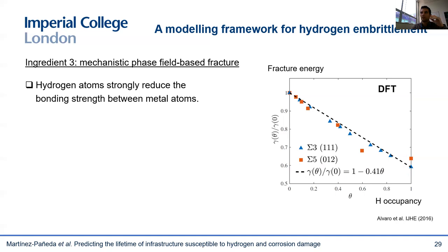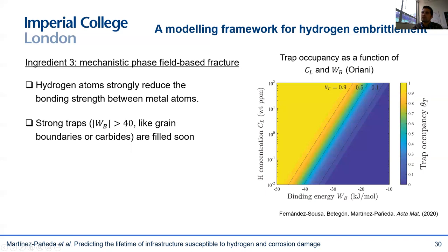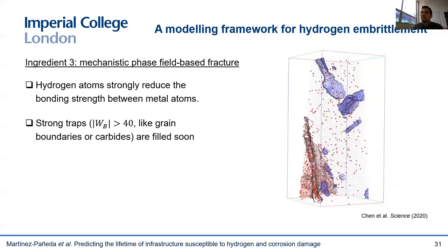If we have enough hydrogen, the grain boundary strength will be weaker. The key question then becomes: how much hydrogen do we have in our grain boundaries? The answer comes from the chemistry and thermodynamics of hydrogen trapping. Using Oriani's equilibrium, we can plot the trap occupancy as a function of binding energy and hydrogen concentration in the lattice. Strong hydrogen traps with a binding energy on the order of −40 kJ/mol are essentially full of hydrogen for lattice concentrations as low as 0.3 ppm. So it is very energetically favorable for hydrogen to reside in grain boundaries, and this has been recently confirmed experimentally with atom probe tomography, where a grain boundary is shown to be full of hydrogen atoms.